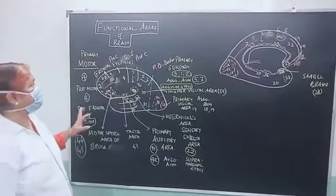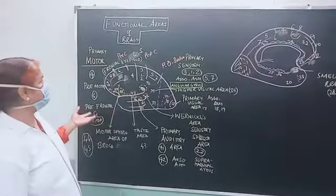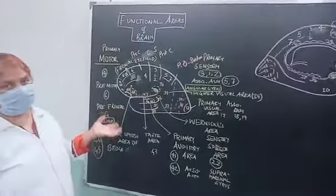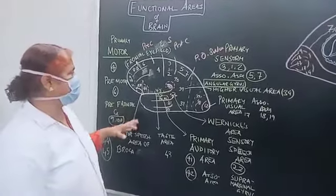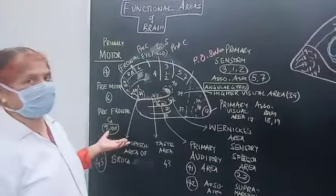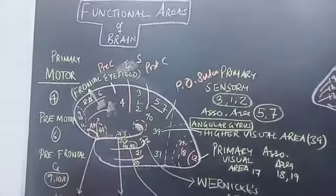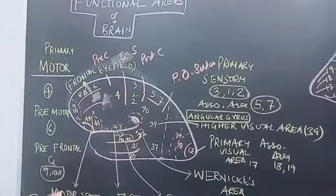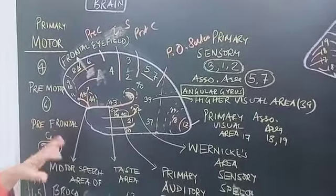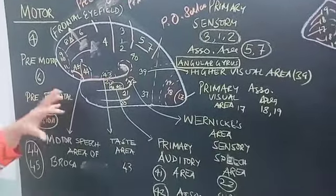Now, let us start with the functional areas of the brain. We already know about the sulci and gyri of the cerebrum. Here we will see gyri which have been taken up by the areas called the functional areas of the brain. This numerical labeling is done by Brodmann on an experimental basis, and so we come to know about these areas.